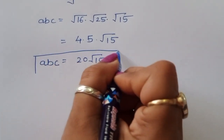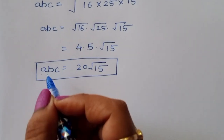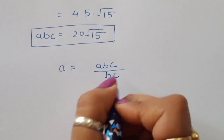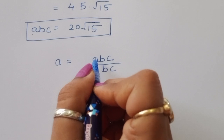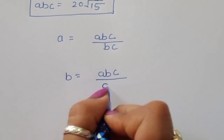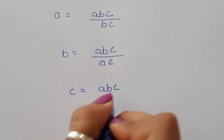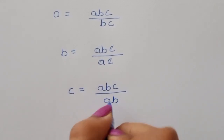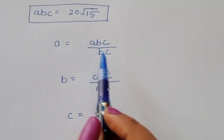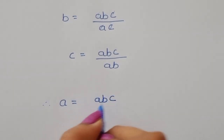ABC is equal to 20 square root of 15. But we have to find the value of A plus B plus C, so we need the individual values of A, B, and C. We can find A by dividing ABC by BC, find B by dividing ABC by AC, and find C by dividing ABC by AB.